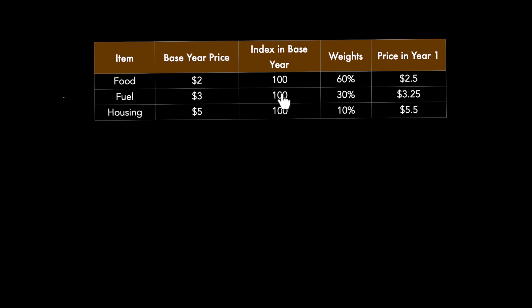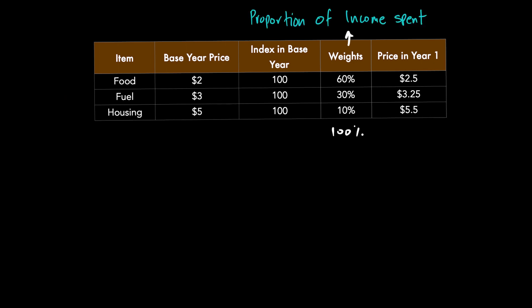Another important consideration is that the household doesn't spend equal amounts on all three items. In fact, 60% of income goes on food, 30% on fuel, and 10% on housing — totalling 100%. This proportion of income spent is called the weight. Because food is most important, it gets the highest weight of 60%. We therefore use something called a weighted average to calculate inflation.